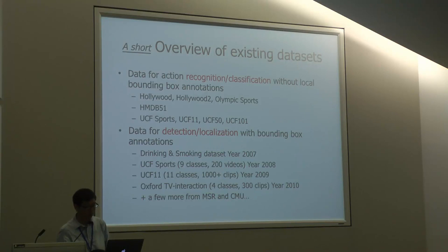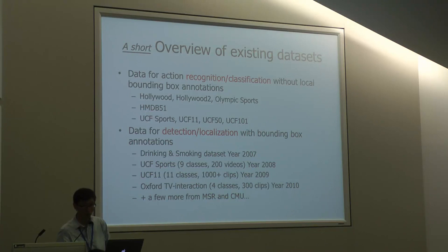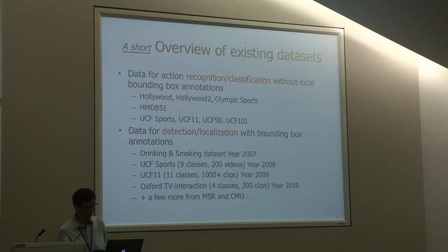Let me start with a short overview of existing datasets. We mentioned in the morning that we have a couple of datasets, but for detection and localization compared with recognition or classification, we have a much fewer number. One of them is drinking and smoking, developed in 2007, and also UCF Sports with nine classes and 200 videos from 2008, and UCF 11 with 11 classes and more than 1,000 clips.